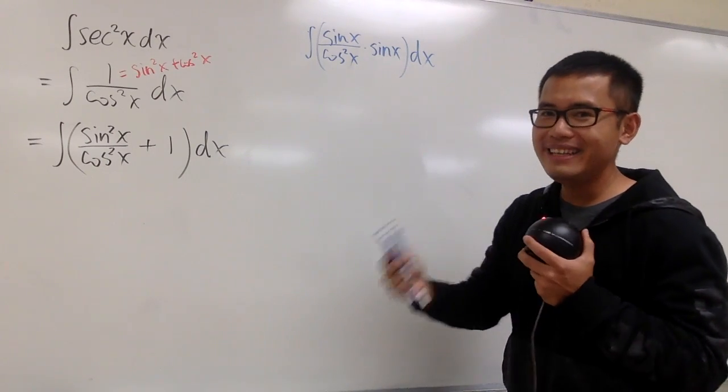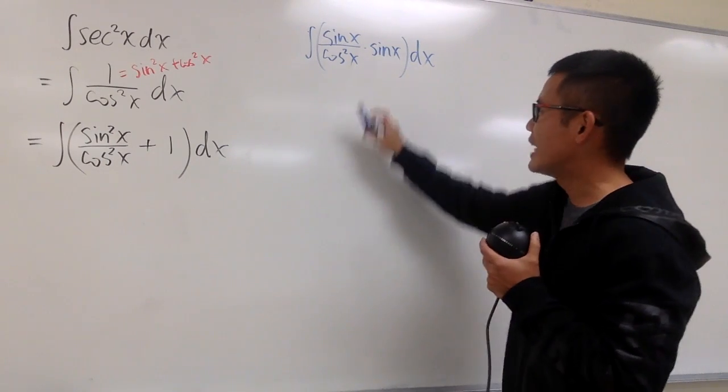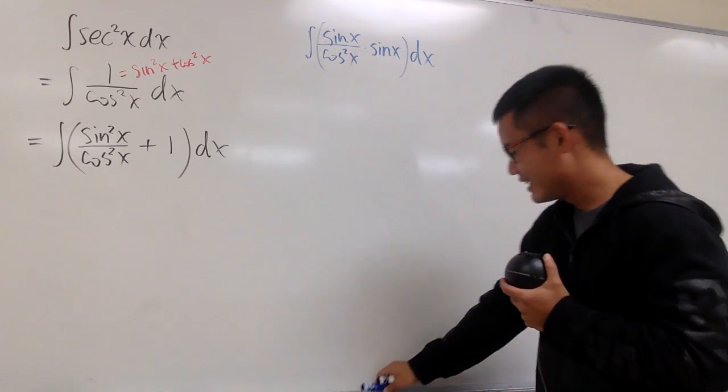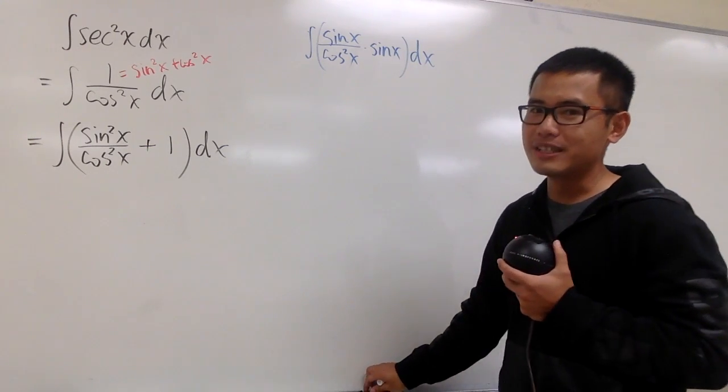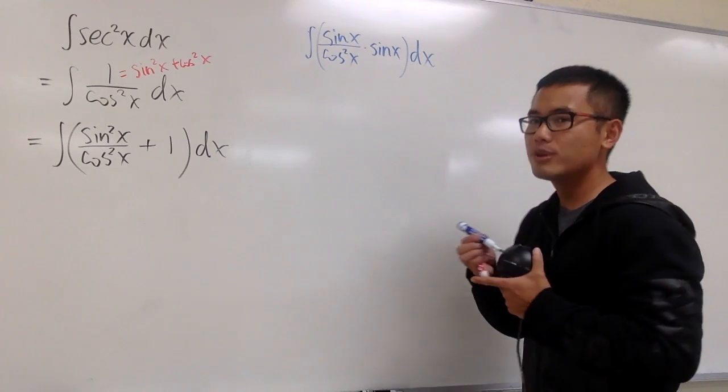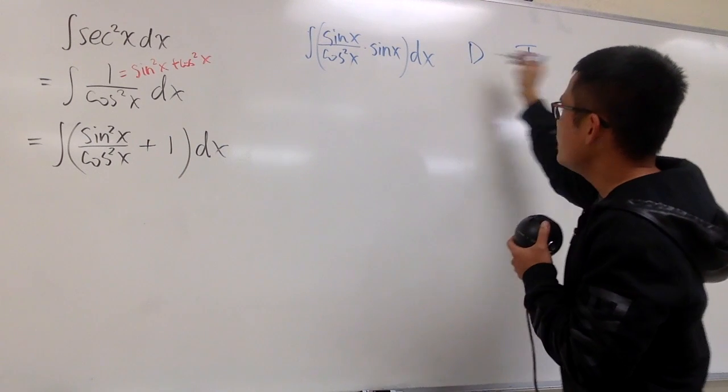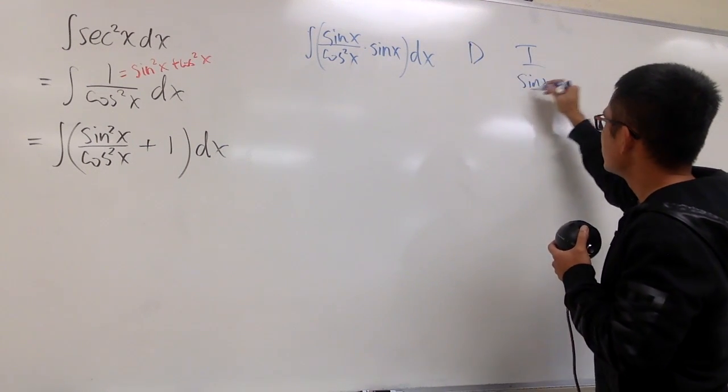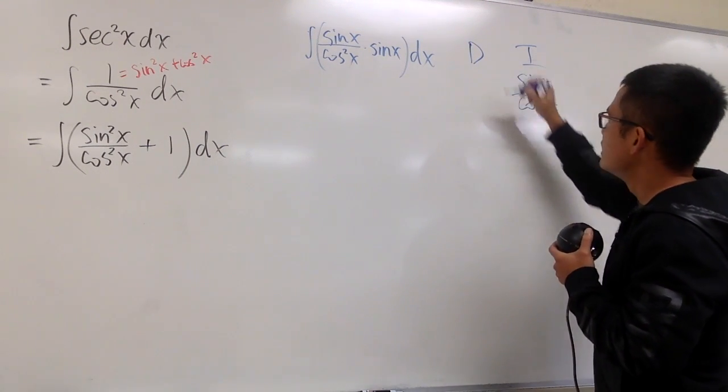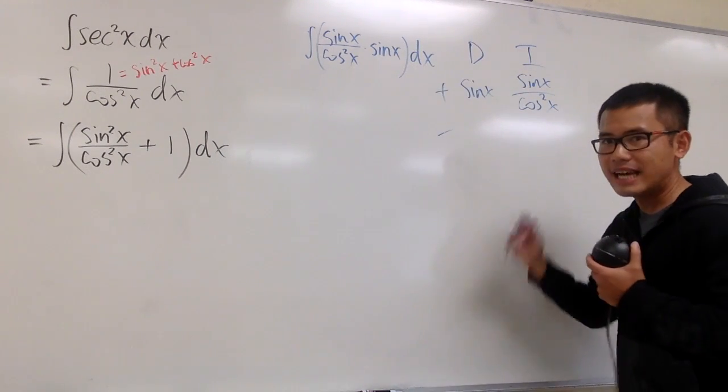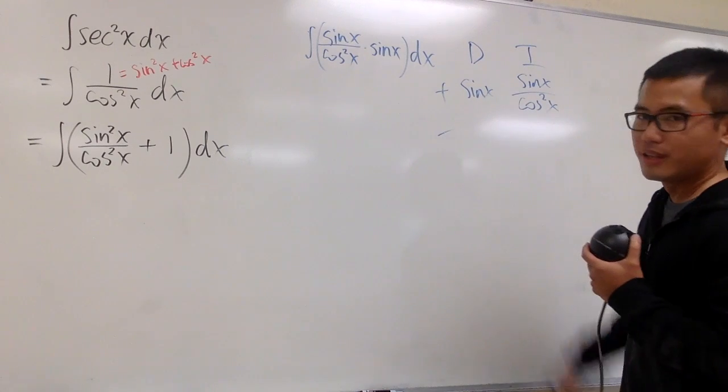And you see, why don't we do this by integration by parts? Because I can integrate this, this is just really innocent. So, let's do that. And of course, I'll show you with the DI method to do integration by parts. Put the d and then the i.